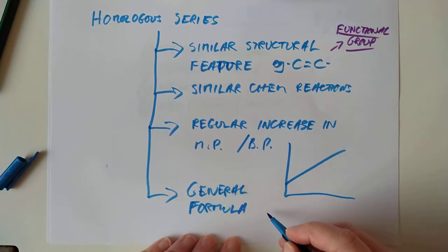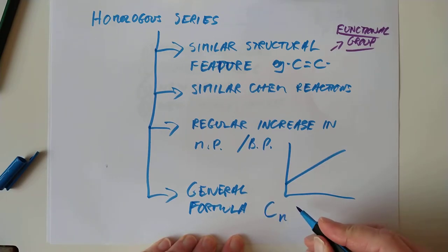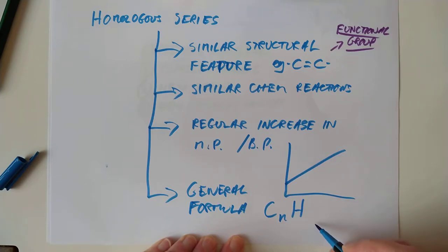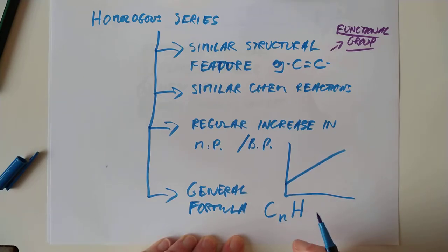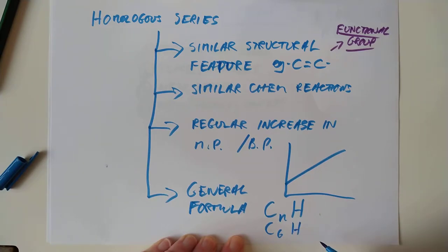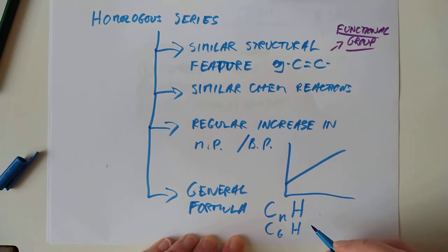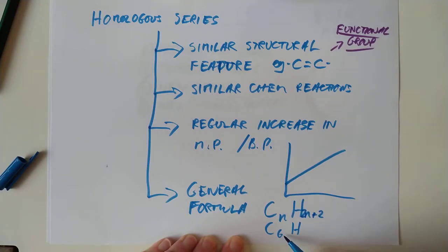The example for the alkanes: if you had N carbons — you can pause the video and see if you can remember this — how do you calculate the number of Hs? If you had six carbons, for example, you could draw it all out, but life's too short for that. Hopefully you can remember it's 2N + 2. Multiply 6 by 2 gives you 12, add another 2, and you get C₆H₁₄.